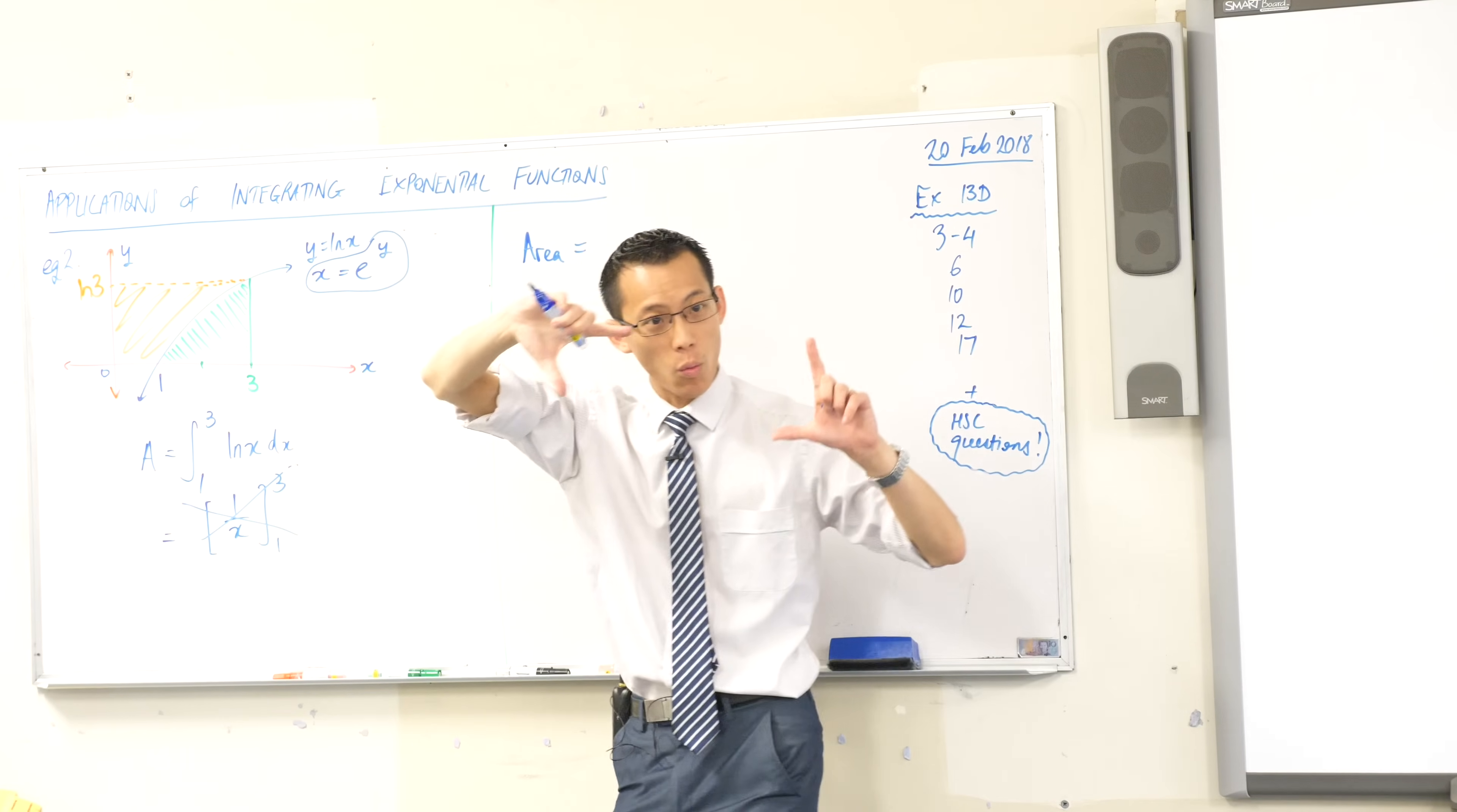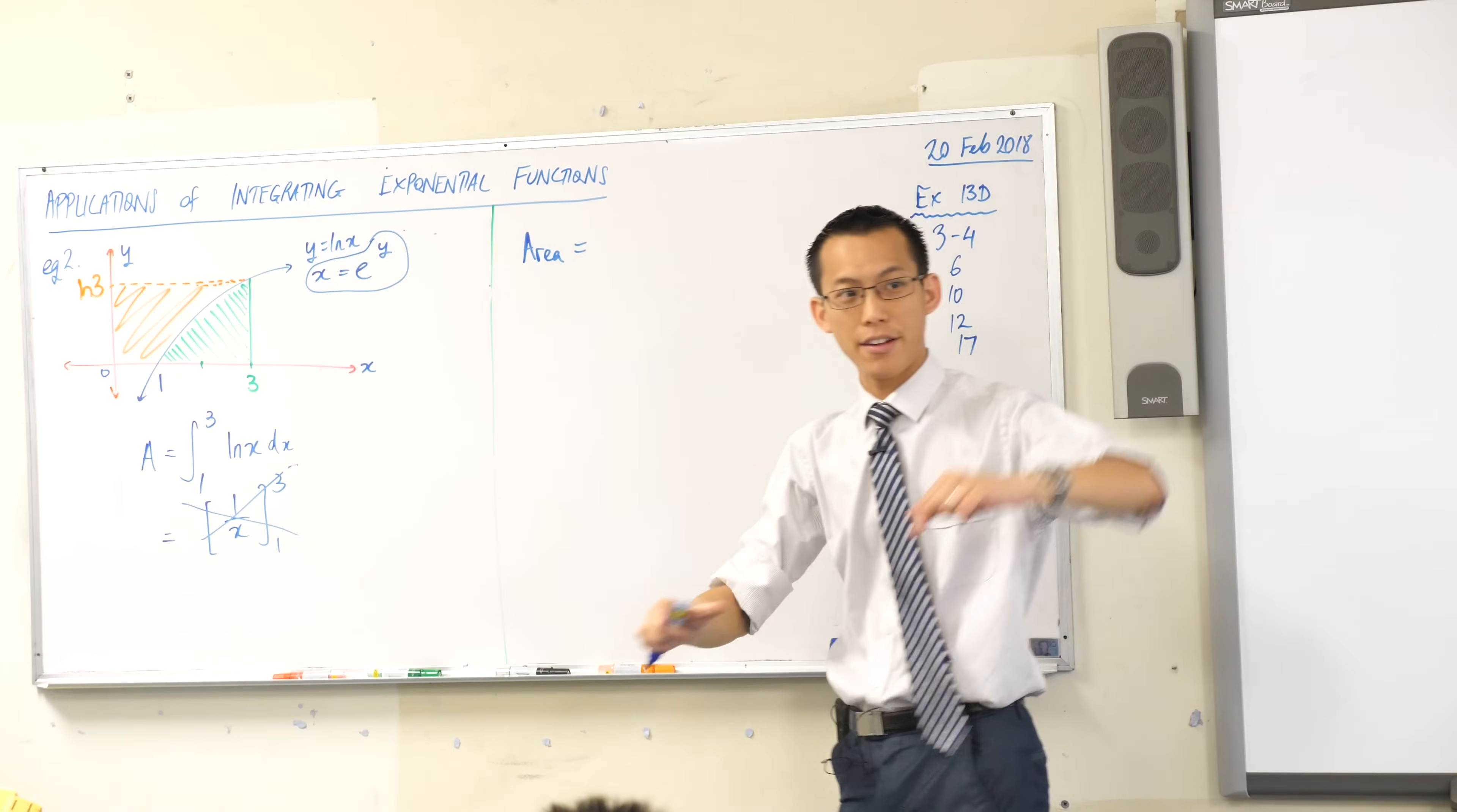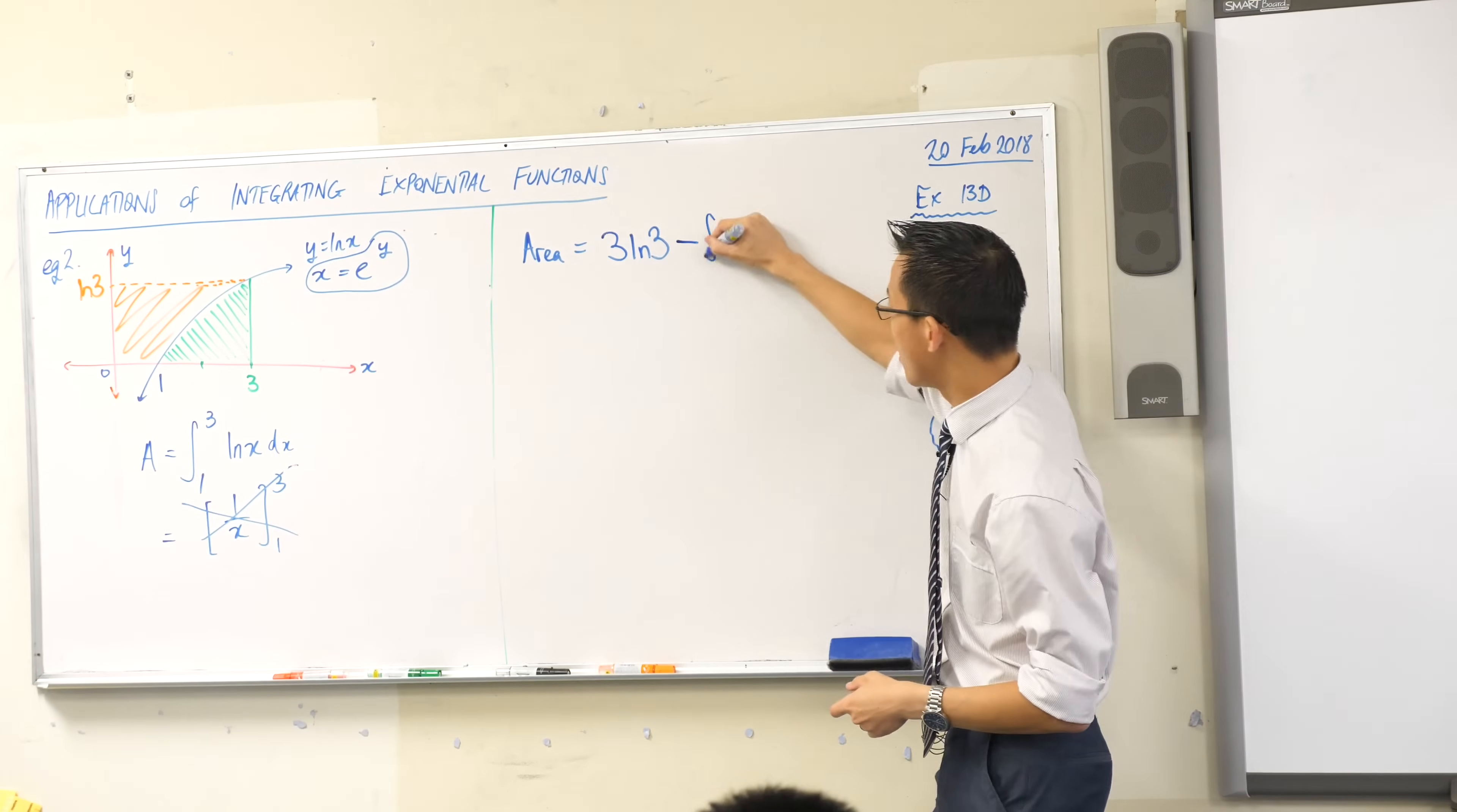What are the dimensions of this rectangle? How wide is it? It's three units across, see that, 0 to 3. And how high? It's log 3, do you see that? So therefore I can find that rectangle, that's how wide it is, that's how tall it is. And then if I want the green area I will—what am I gonna do? I'm gonna subtract the orange area.